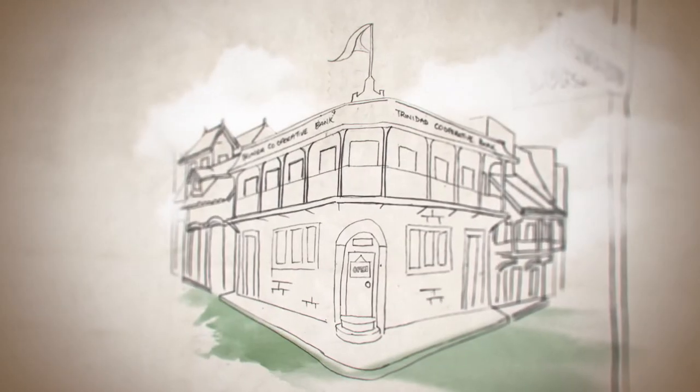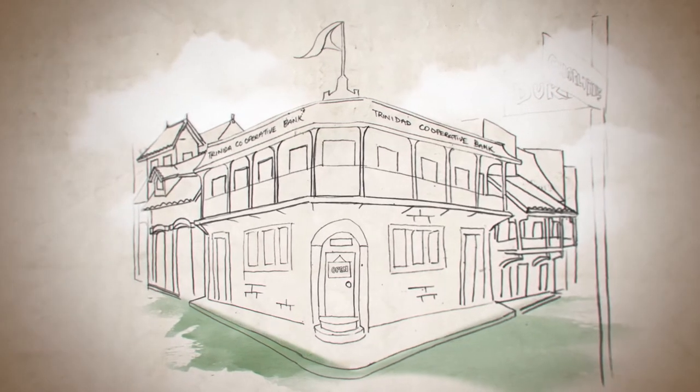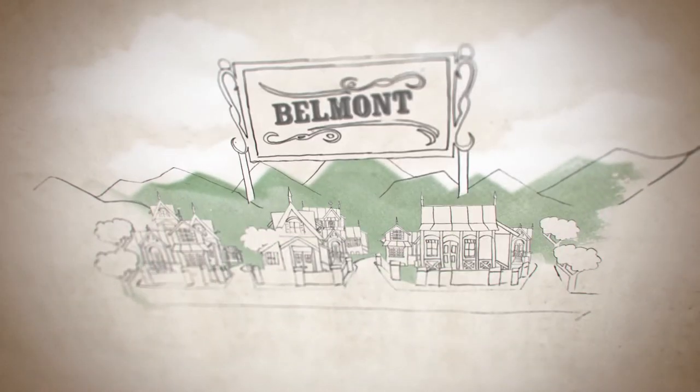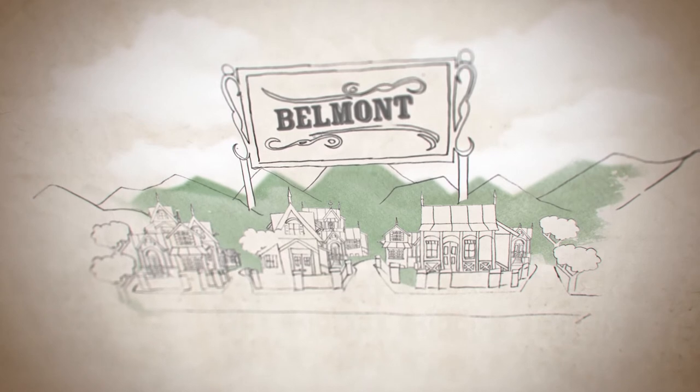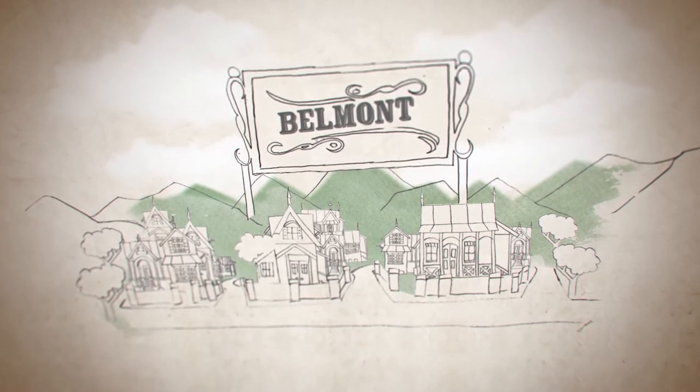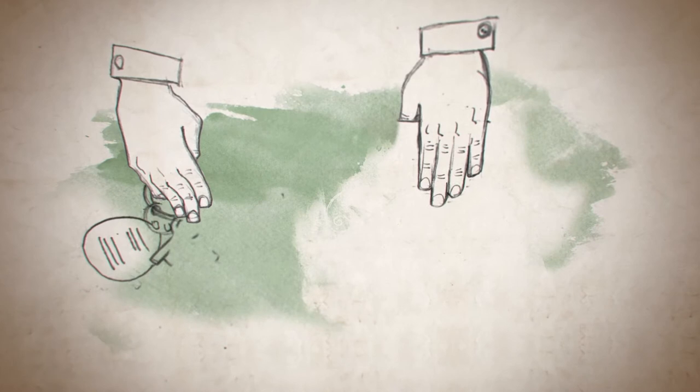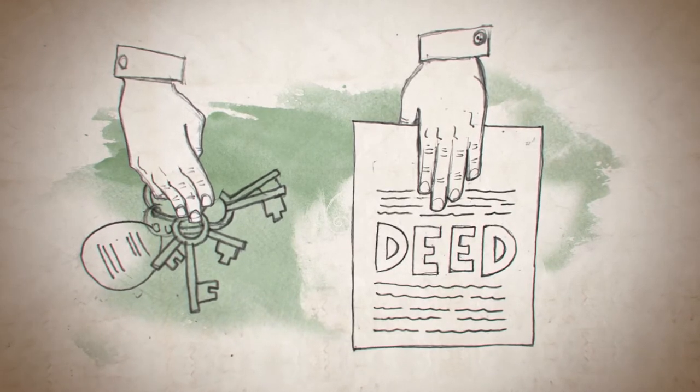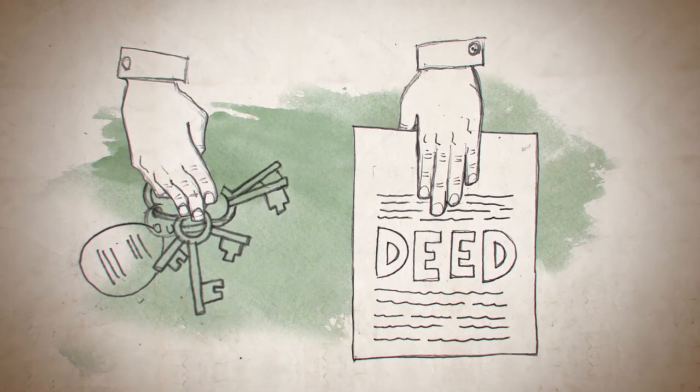The Trinidad Cooperative Bank, affectionately called the Penny Bank, became an aggressive pioneer of affordable housing in Trinidad. And in 1929, it acquired an area in Belmont and built and rented out 30 low-cost houses, which were eventually sold to their tenants on a rent-to-buy basis.